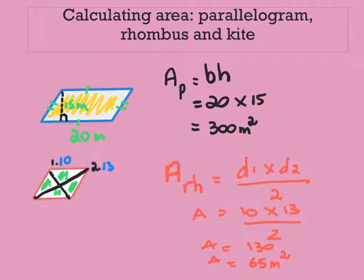Our last shape is going to be our kite. So our kite here is a quadrilateral with two pairs of equal adjacent sides and one pair of equal angles. So that means here's our angles, they are the same, they're just opposite. Here are our equal sides and here are our equal opposite sides.